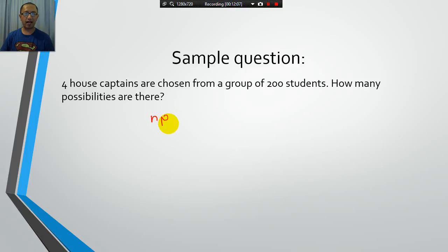So, permutation is NPR. N is 200, R is 4. So, it's 200P4. And you just put that in your calculator. I just showed you how to type it in, so I'm not going to do that again. But if you just put in 200P4 on your calculator, you will get 1,552,438,800, which is a pretty crazy number of arrangements.